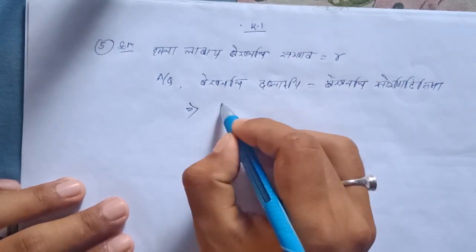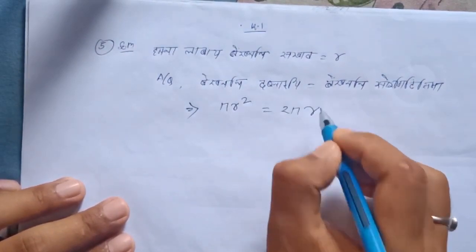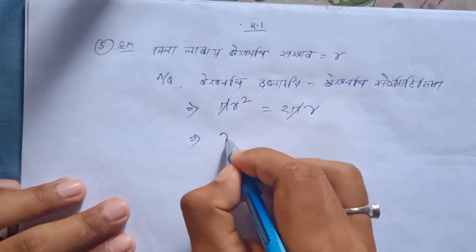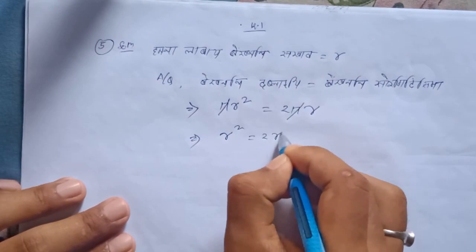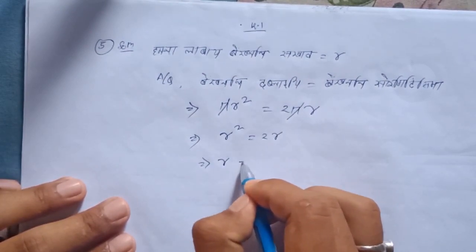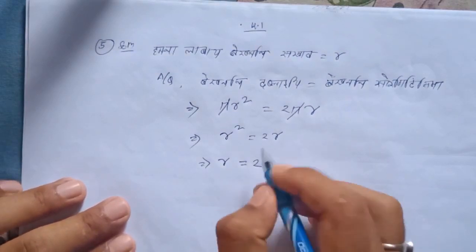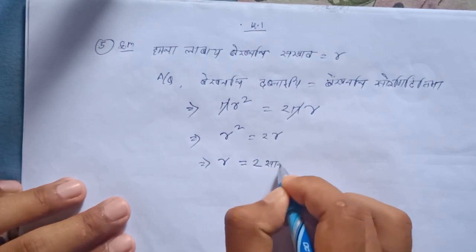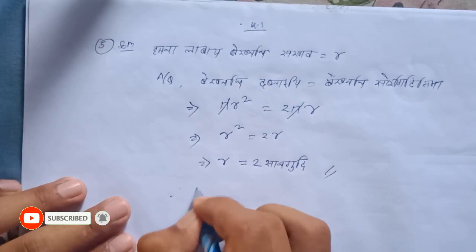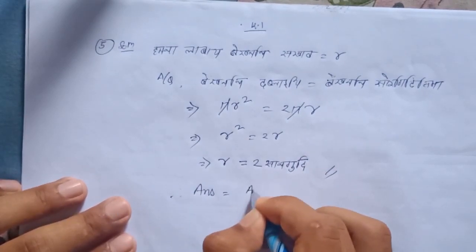This formula is πr² equal to 2πr. If π is cancelled, πr² equals 2r. This implies r² equals 2r, so 2 equals 2. Therefore, r equals √2. The answer is √2.